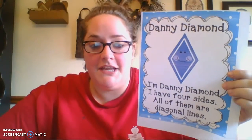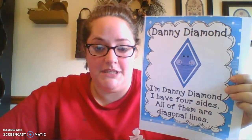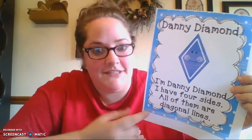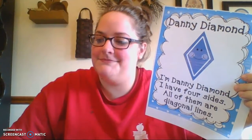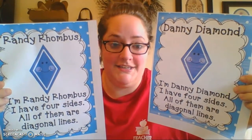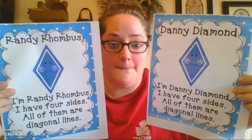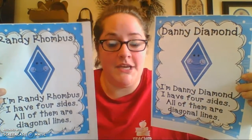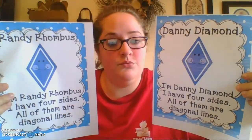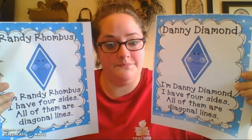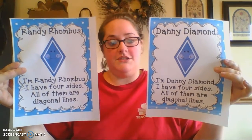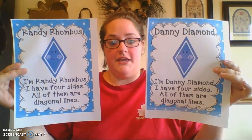So our shape today that we're gonna meet is related to Danny. It's Danny's twin. His name is Randy Rhombus. Sometimes a diamond is called a rhombus, but they're the same shape — they just have two different names.